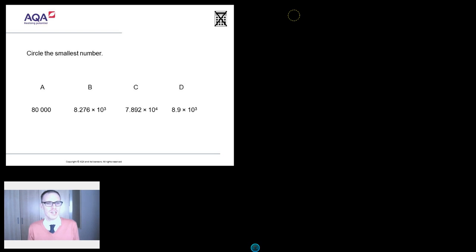So it's been written by AQA, and it simply says, circle the smallest number. Now make sure you read that properly. And we've got 80,000, and then things start to take a nose dive. 8.276 times 10 to the 3.